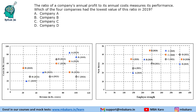The ratio of a company's annual profit to its annual cost measures its performance. Which of the four companies had the lowest value of this ratio in 2019? We mark the 2019 values for A, B, C, and D. C has low profits but its cost is also very low — just 20. D has more profits but its cost is also rising.